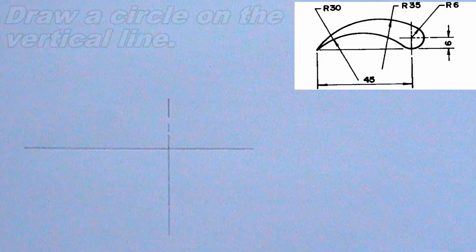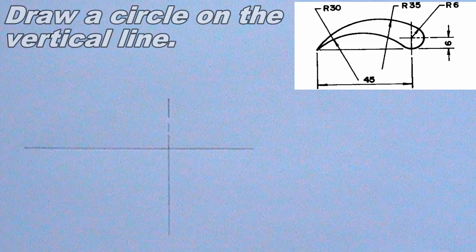Next, I will draw a circle on the vertical line. The radius of the circle should be 6mm, and the circumference of the circle should touch the point where the horizontal and vertical lines intersect.